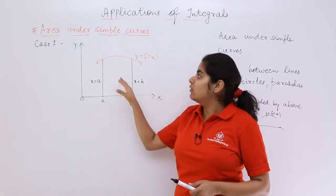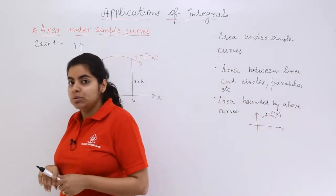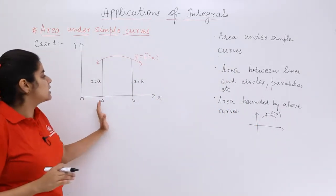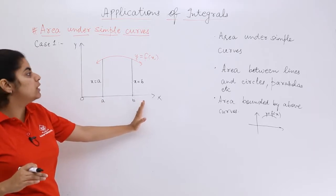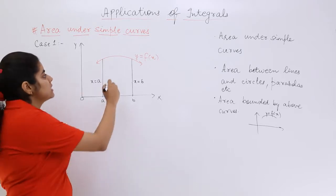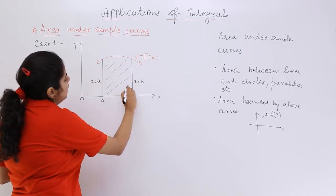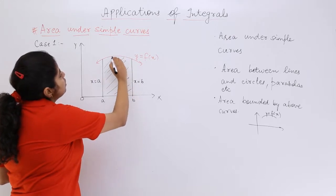Now, as you can see, if this is the case, what area do we have to compute? We have to compute the area from x equals a to b, the region under the curve between the x-axis. You have to basically compute this shaded area. How to compute this shaded area? As we have studied in the previous chapter...